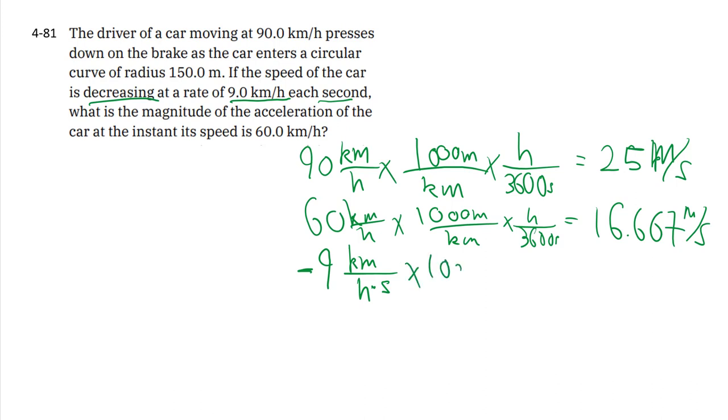So to change into meters per second squared, we only have to do one hour to one second, and then it will combine with the other second to give us meters per second squared. Because that cancels the hour, that cancels the kilometer—you still have two seconds underneath. As it turns out, that's negative 2.5.